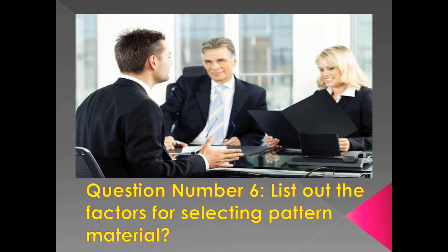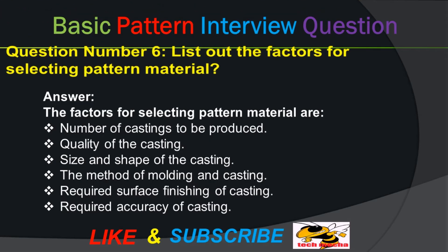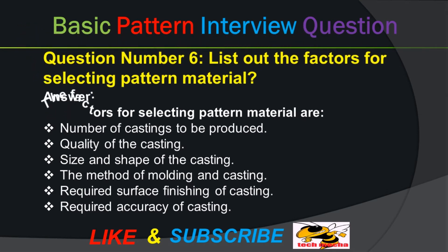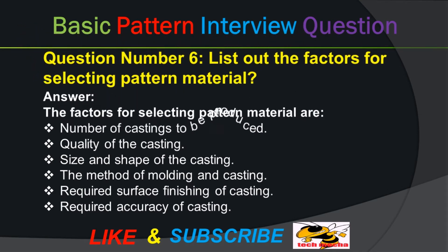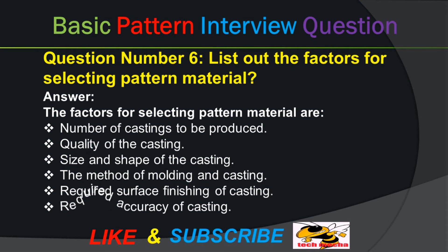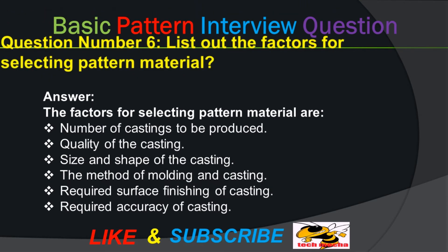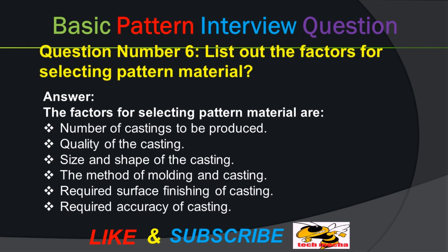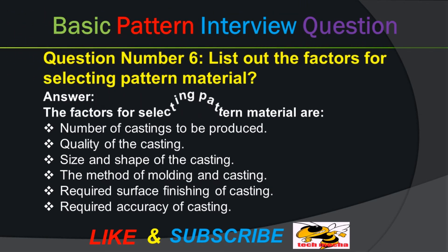Question number six: List out the factors for selecting pattern material. Answer: The factors for selecting pattern material are: number of castings to be produced, quality of the casting, size and shape of the casting, the method of molding and casting, required surface finishing of casting, and required accuracy of casting.